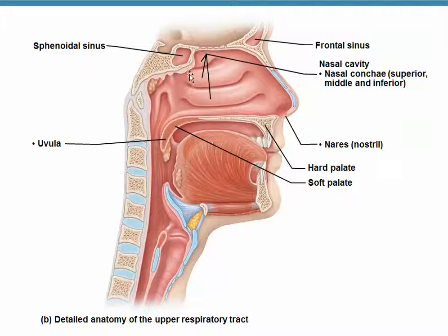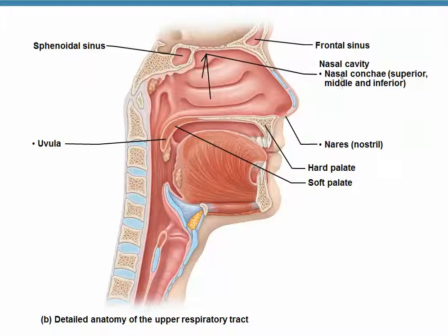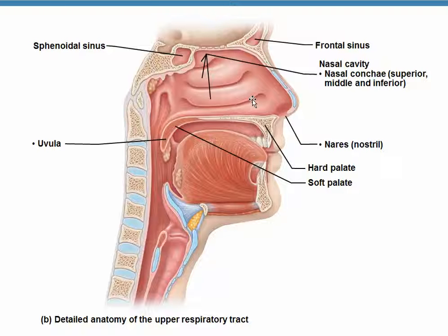Notice that we have these protrusions called nasal conchae — superior, middle, and inferior nasal conchae. Their function is to cause turbulent flow of air as it moves through the nasal cavity. We want that air to bump up against the mucosa as much as possible in order to warm it and clear it of dirt, debris, and possible infectious microorganisms.